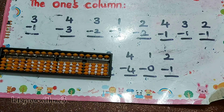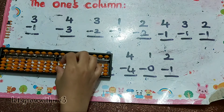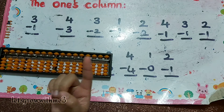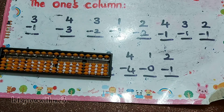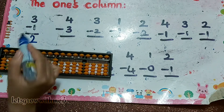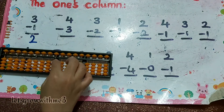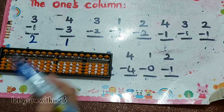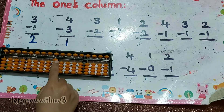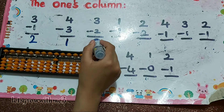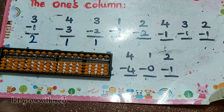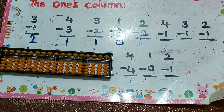When you are doing sliding down you should use your index finger. 3 minus 1 — answer is 2. Next one: 4 minus 3 — answer is 1. Next one: 3 minus 2 — answer is 1. Next: 1 minus 1 — answer is 0.